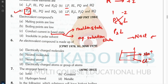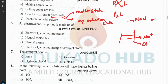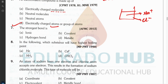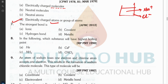Question six: an electrovalent compound is made up of electrically charged atoms or group of atoms — this is correct. It is not molecules; in nitrogen compounds the molecule is the final product. We talk about atoms, not molecules, in ionic compounds.